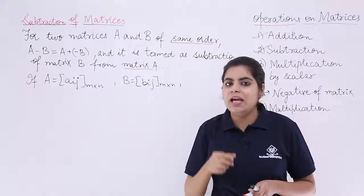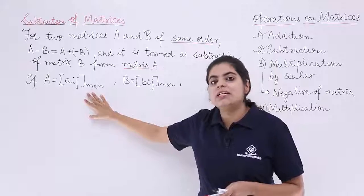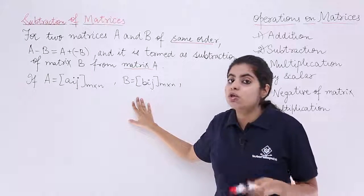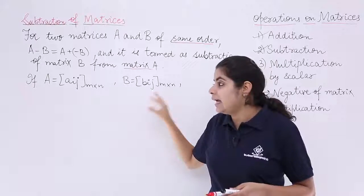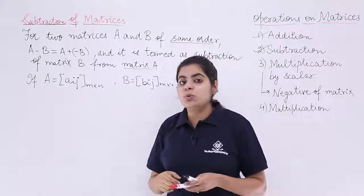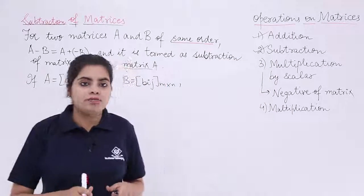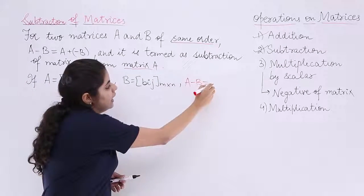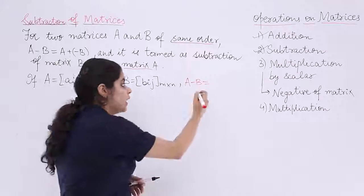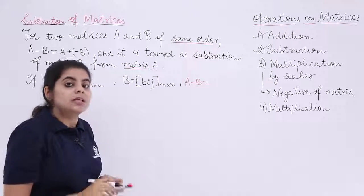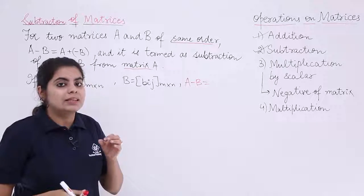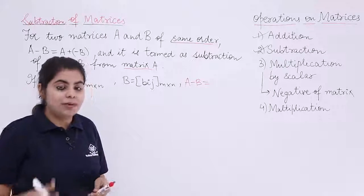Suppose I have A matrix as Aij and its order is M by N. The B matrix given to me is also having the same order M by N and I want to compute what is the result of the subtraction operation, that means what is A minus B. So A minus B means what? The similar operation that we did as in the case of addition. That time we had Aij plus Bij.